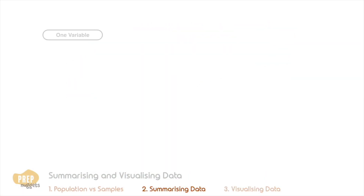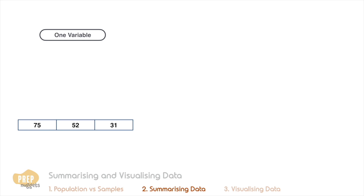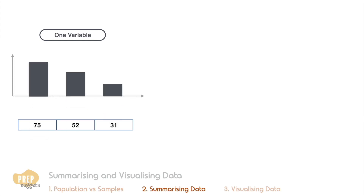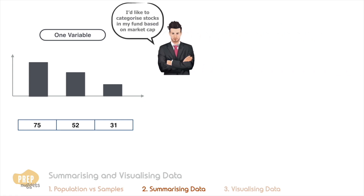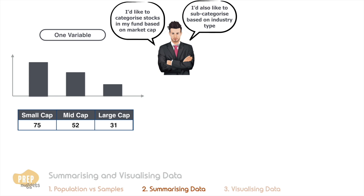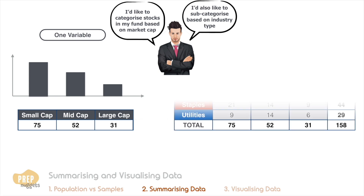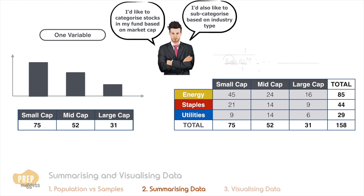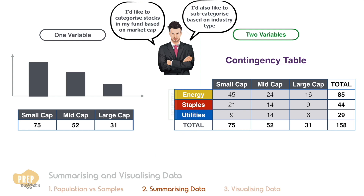So far we've been talking about frequency distributions based on one single variable, which are easily visualized using bar charts or histograms. For example, a fund manager may want to categorize the stocks in a fund based on market capitalization — whether they are small cap, mid cap, or large cap stocks. If he also wishes to sub-categorize based on industry representation, the data can be summarized using a two-dimensional array. Such tables are known as contingency tables, which allow us to analyze two variables at the same time. The rows represent attributes of one variable and the columns represent attributes of the other variable.